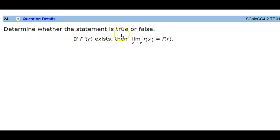Determine whether the statement is true or false. If f prime of r exists, or the derivative exists, then the limit as x approaches r of the function f(x) is equal to the function at r.